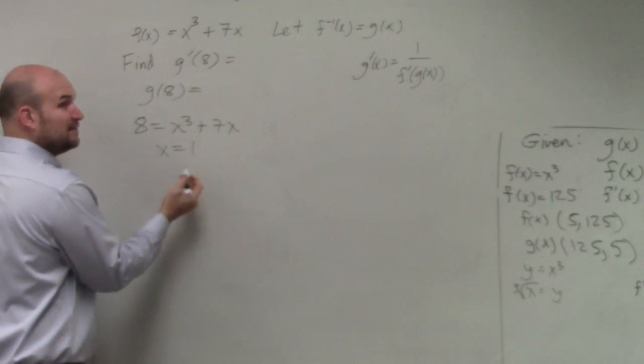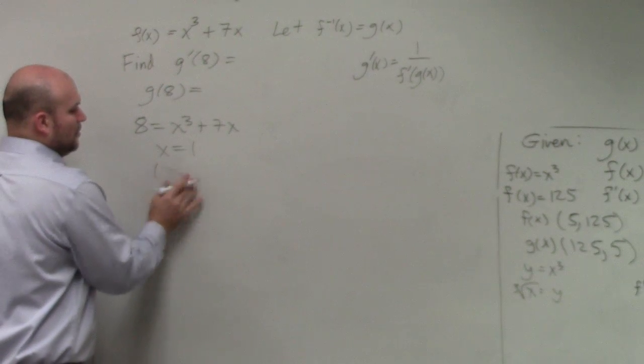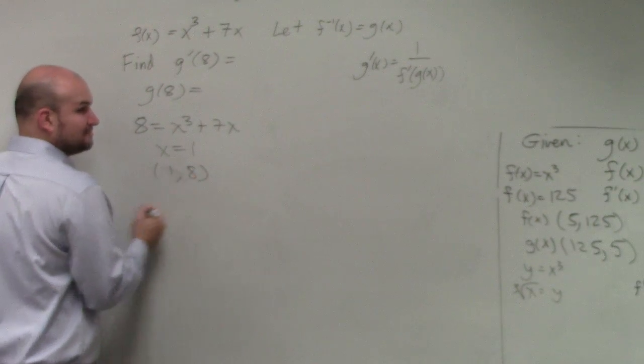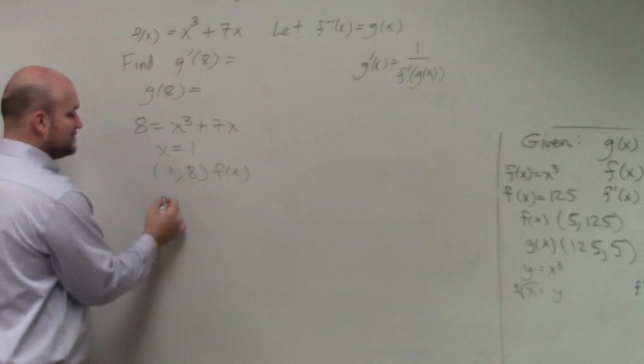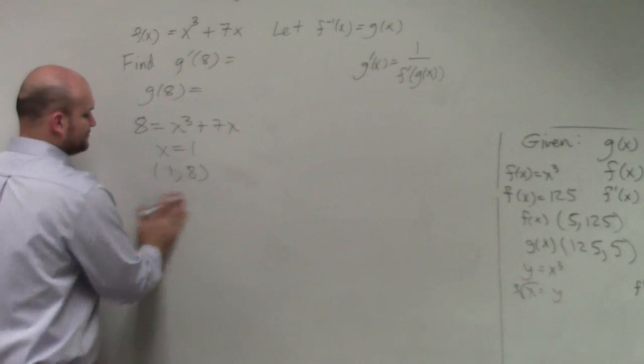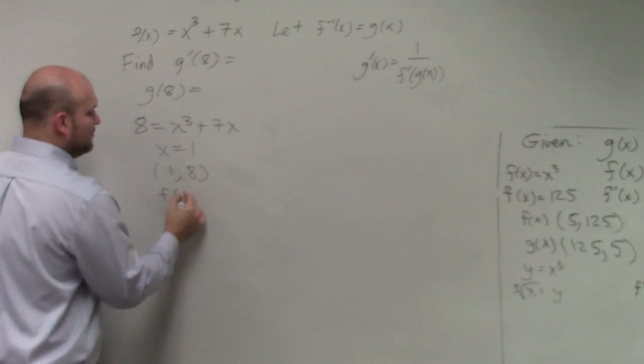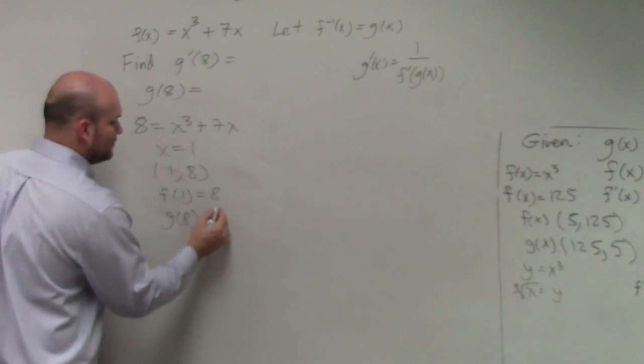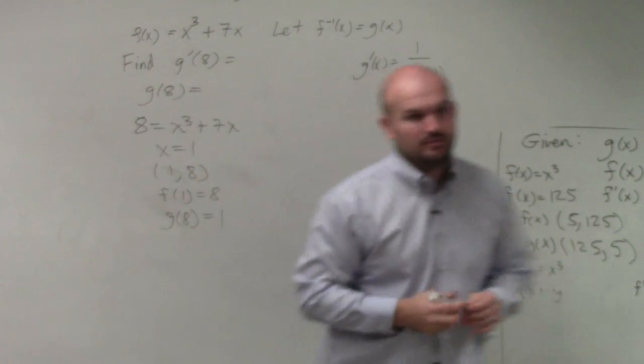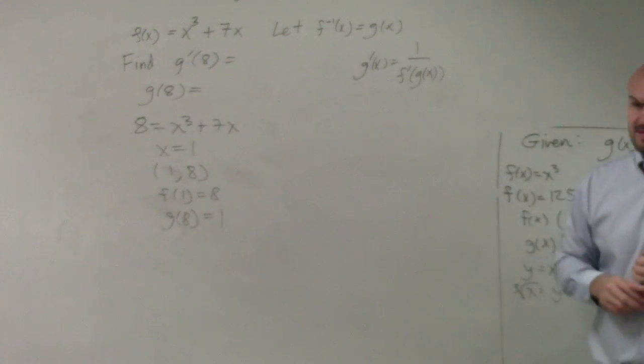So now I have a coordinate point: (1, 8) is my point in f(x). So therefore, my g(x), or sorry, let's do this. So therefore, f(1) = 8. Therefore, g(8) = 1. Would you guys agree with my assessment there?